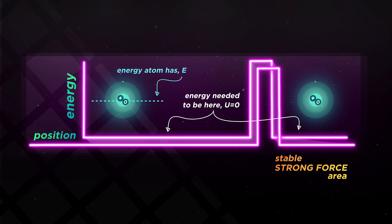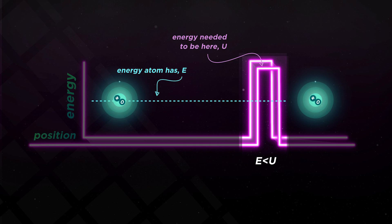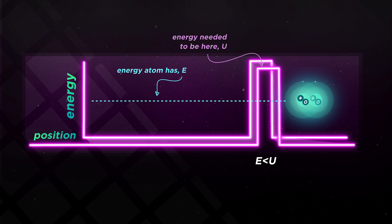We also set the energy this atom has as some value E, which is less than the energy needed to be here, U. The value doesn't matter. So long as the energy is less than what's required to actually pass through, then we shouldn't find the atom here, right? When it does, it's quantum tunneling.